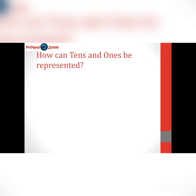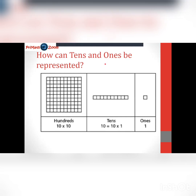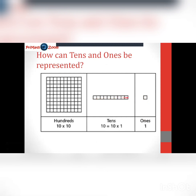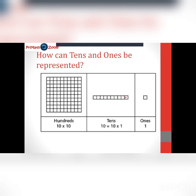How can tens and ones be represented? Using base ten blocks, this little square right here represents ones. This longer unit, we call it longs, or we call it tens. It has ten ones in it — one through ten — so ten times one gives us ten, which is this tens manipulative or longs. We call the small square units and we call the longer piece longs.